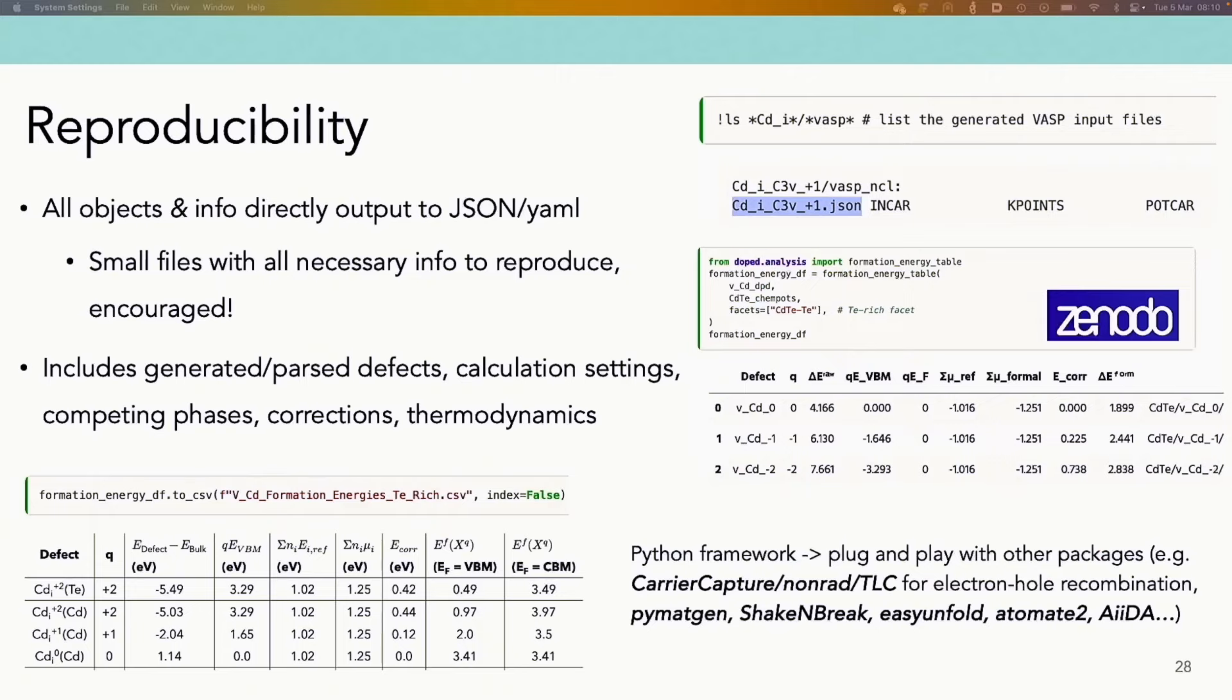So lastly, just a note on reproducibility. All stages of the workflow in DOPED can be easily output and in fact automatically are output to JSON files, which are these small files but contain all the necessary information to reproduce each stage of the workflow, showing all the different contributions to terms like formation energies and charge corrections. We also have a number of these tabulation functions that automatically output these tables that can show different contributions to your formation energies and charge corrections, so it can be easily put in the SI of a paper just to aid interpretability and reproducibility. And actually its Python framework makes it quite plug and play with a variety of other advanced analysis defect codes, so ones that can be used for electron-hole recombination, high-throughput calculations, defect structure searching, et cetera.